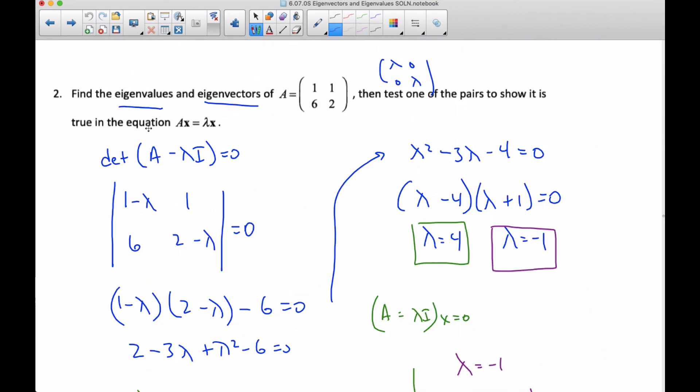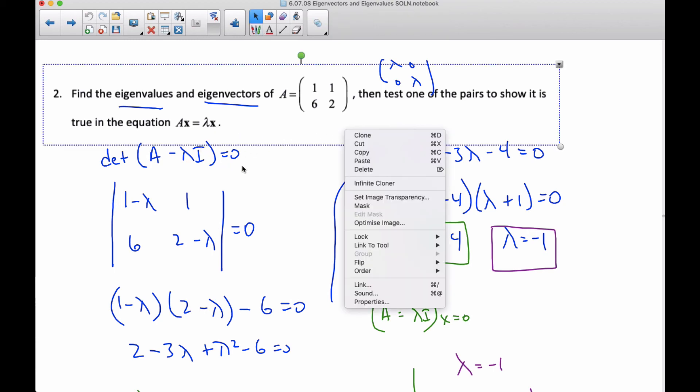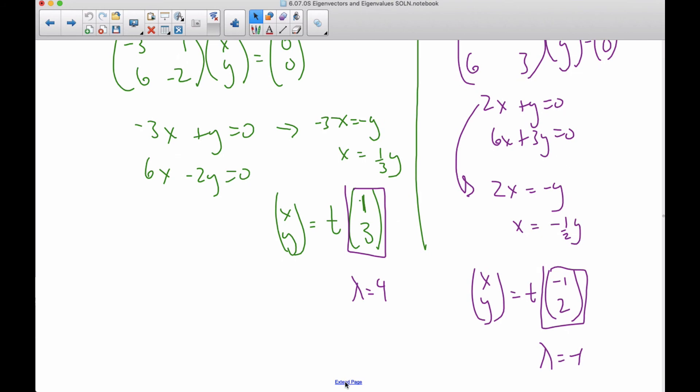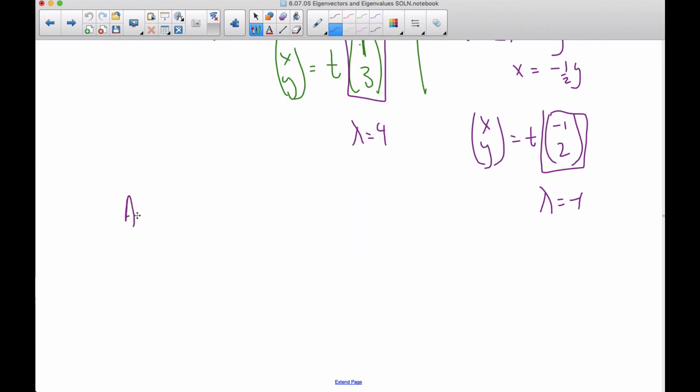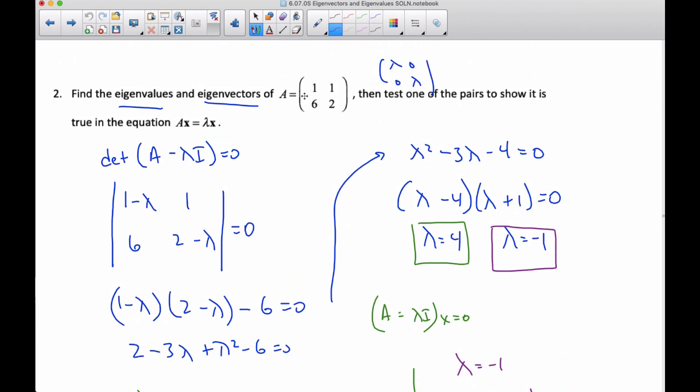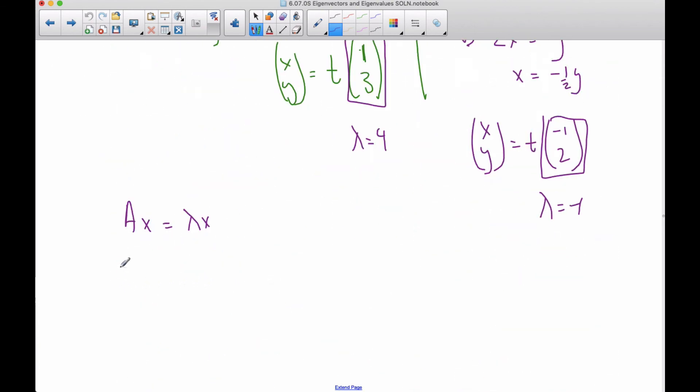And then it finally says, test one of the pairs to show that this is true. So if I want to show that AX is equal to lambda X, well, I know that A is one, one, six, two. A is one, one, six, two.